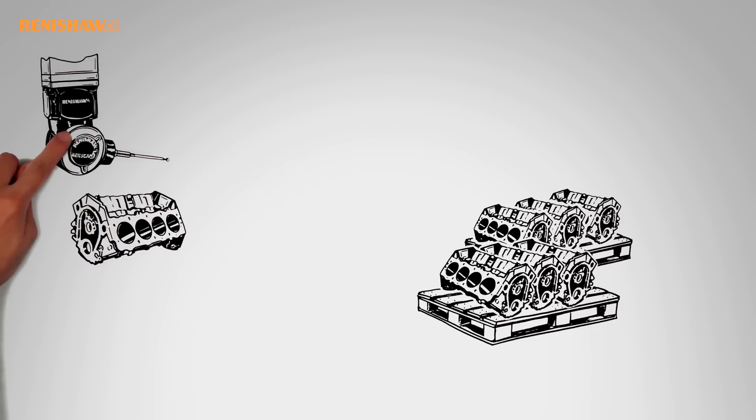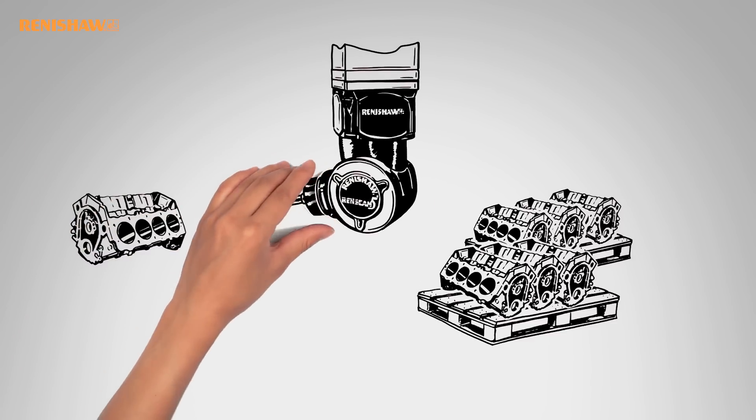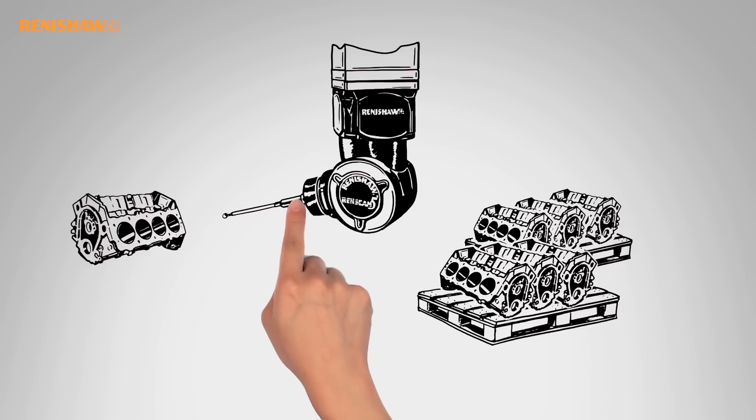The measuring head scans the complete part in one operation, and unlike probes with fixed stylus configurations, seldom needs more than one stylus.